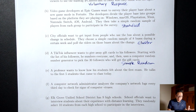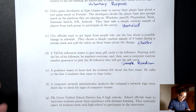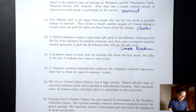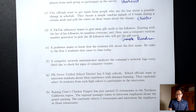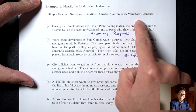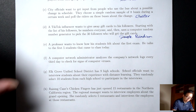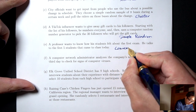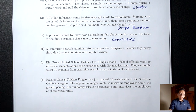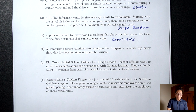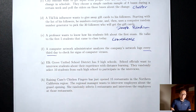Part E: A professor wants to know how his students felt about the first exam. He talks to the first five students that came into class that day. There's no word 'random' anywhere, so this is either convenience or voluntary response. Picking the first five students is like picking the first 10 customers at a store — this is convenience. Part F: A computer network administrator analyzes the computer's network logs every third day to check for signs of computer viruses. I see the phrase 'every third day' — this is systematic.